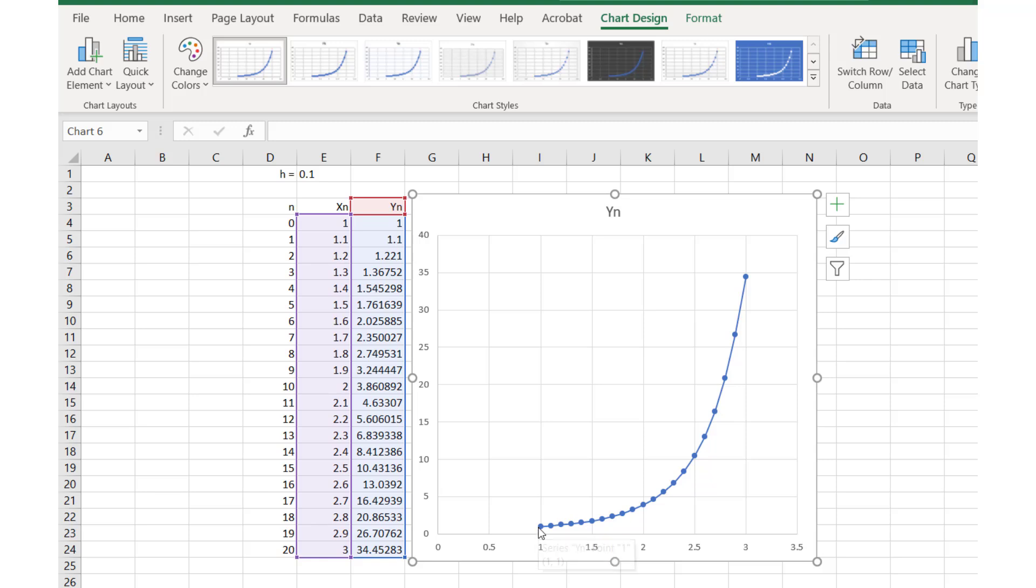The first one here is our initial condition, x equals 1 and y equals 1. Here is the point where the Houston video stopped, x equals 1.3 and y equals 1.36752. The curve formed by connecting these dots is a graph of our approximation to the solution.